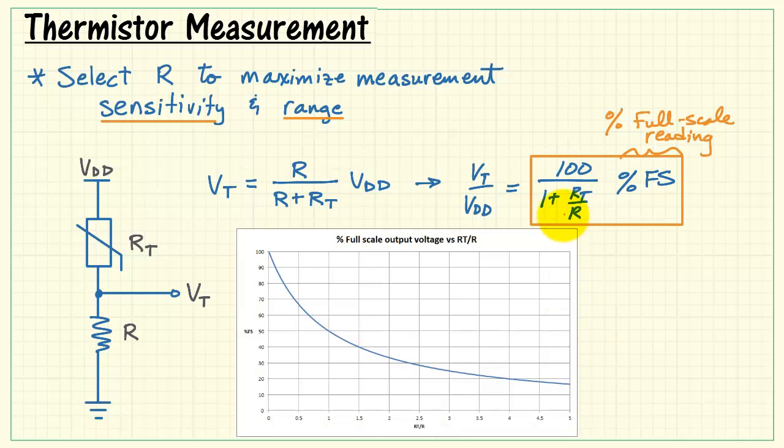Here's a plot of the percent full scale output as a function of the normalized thermistor resistance. We have 100% at the top and then as the thermistor resistance varies we see that we drop from 100%.